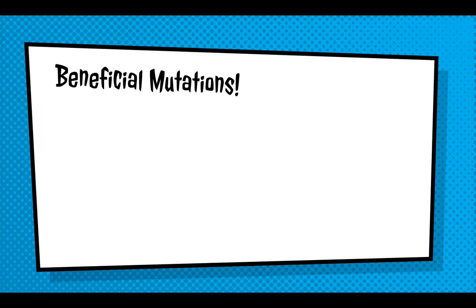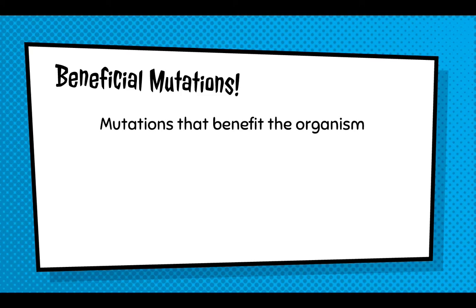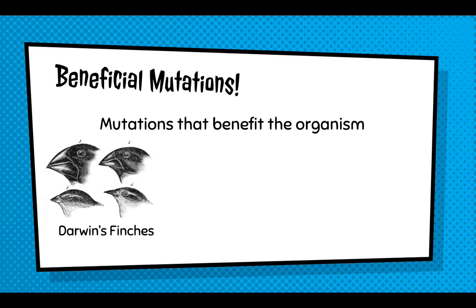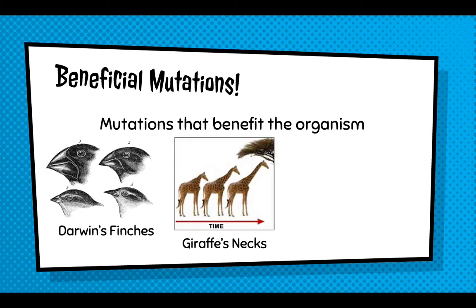That said, chromosomal mutations are not always a bad thing. There are such things as beneficial mutations — anything that benefits the organism and makes it better. Darwin's finches had mutations that changed beak size, giving them the ability to eat different types of foods and ultimately resulting in different species of finches. Another example is the neck of the giraffe — over generations, the mutation allowing for a longer neck became more advantageous, so those individuals survived long enough to breed and the long-neck mutation grew.